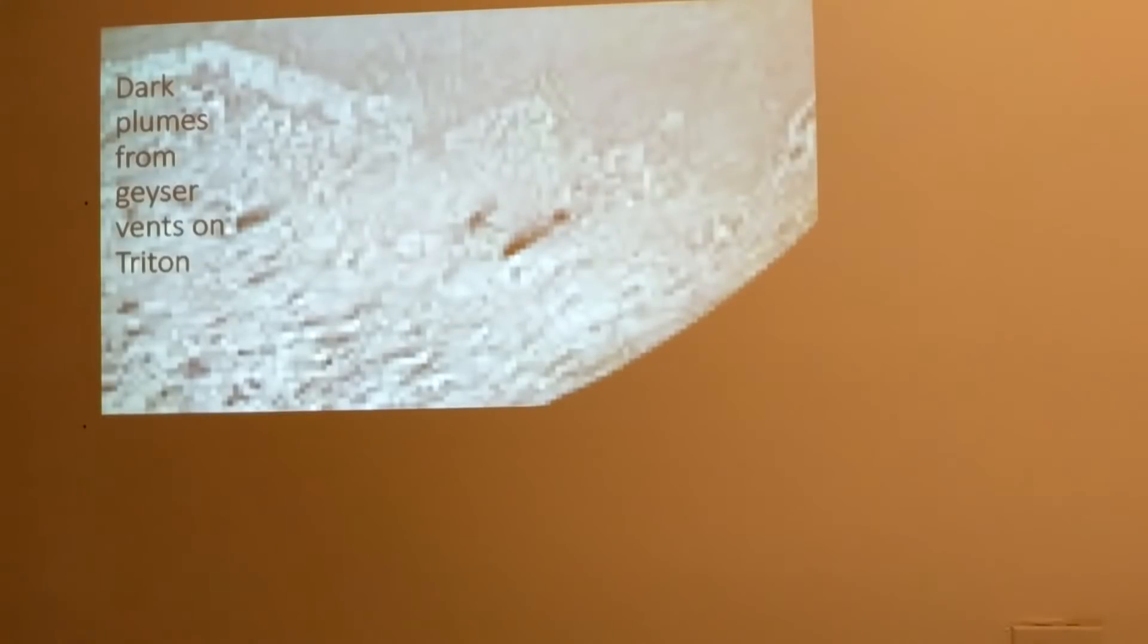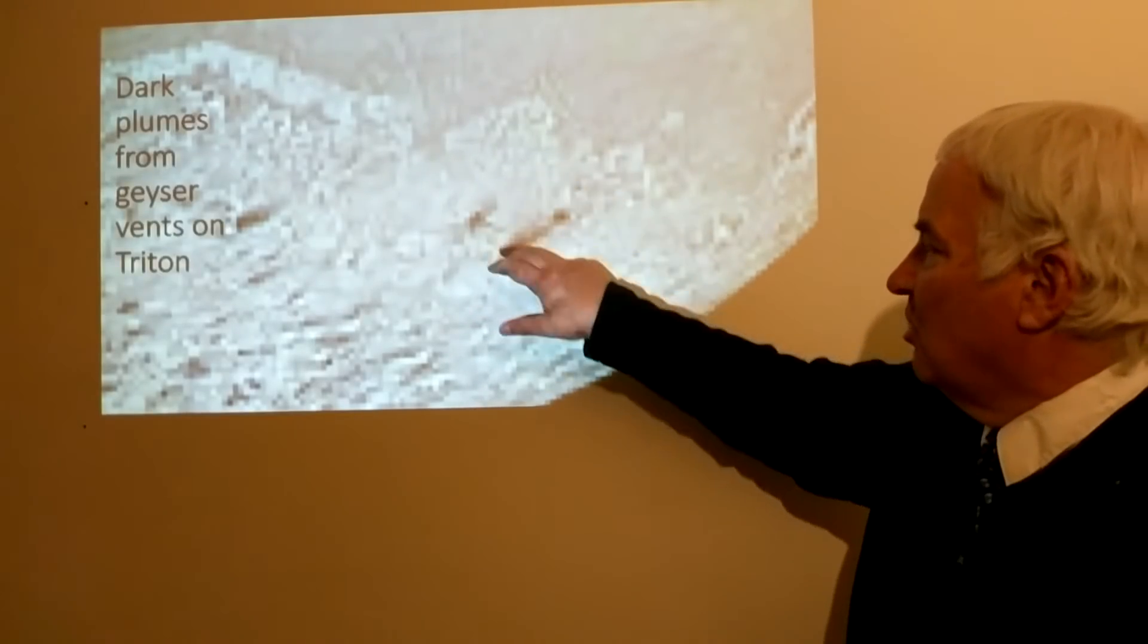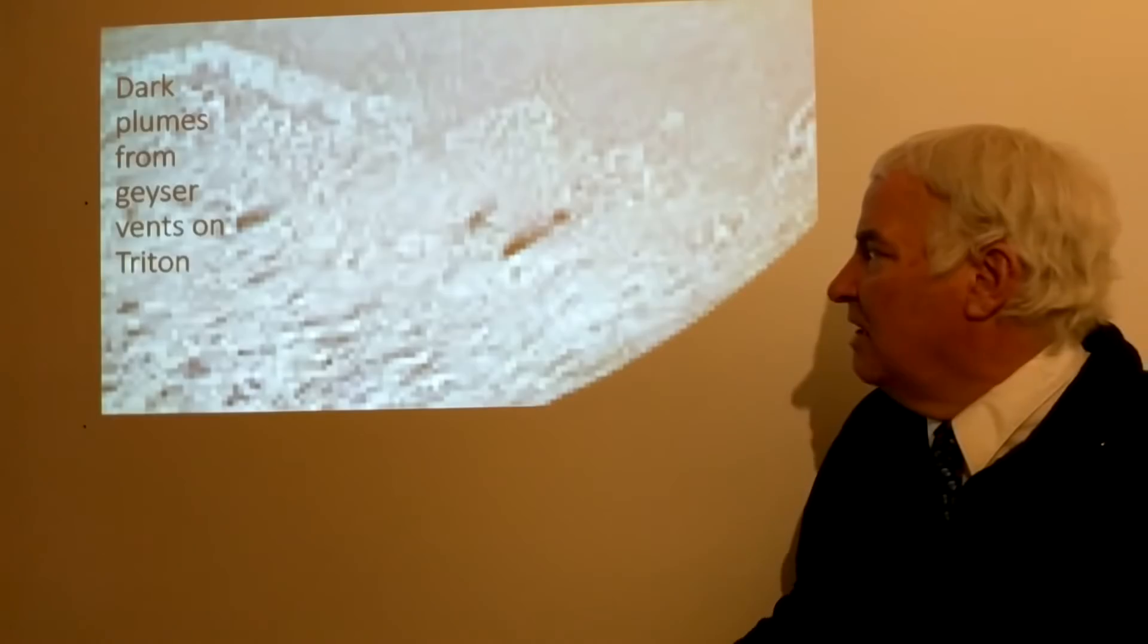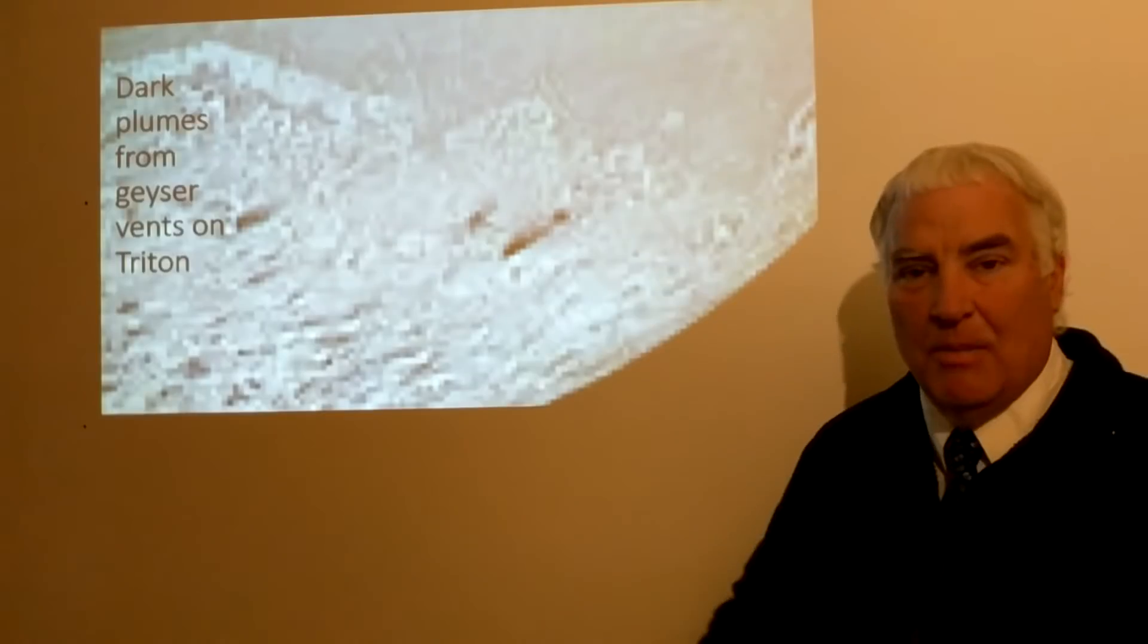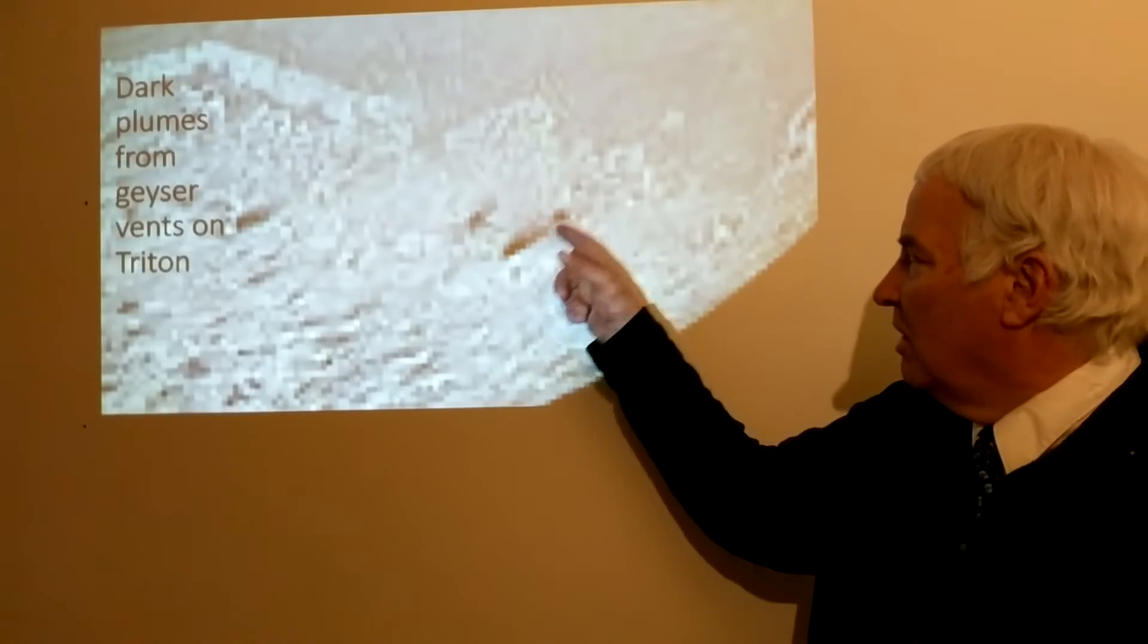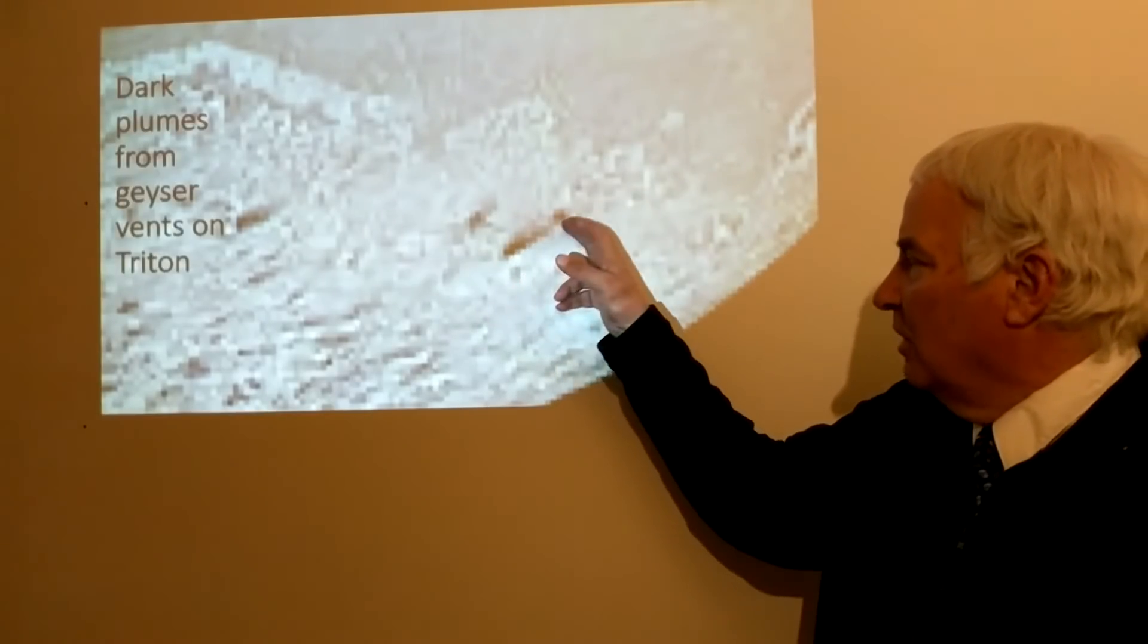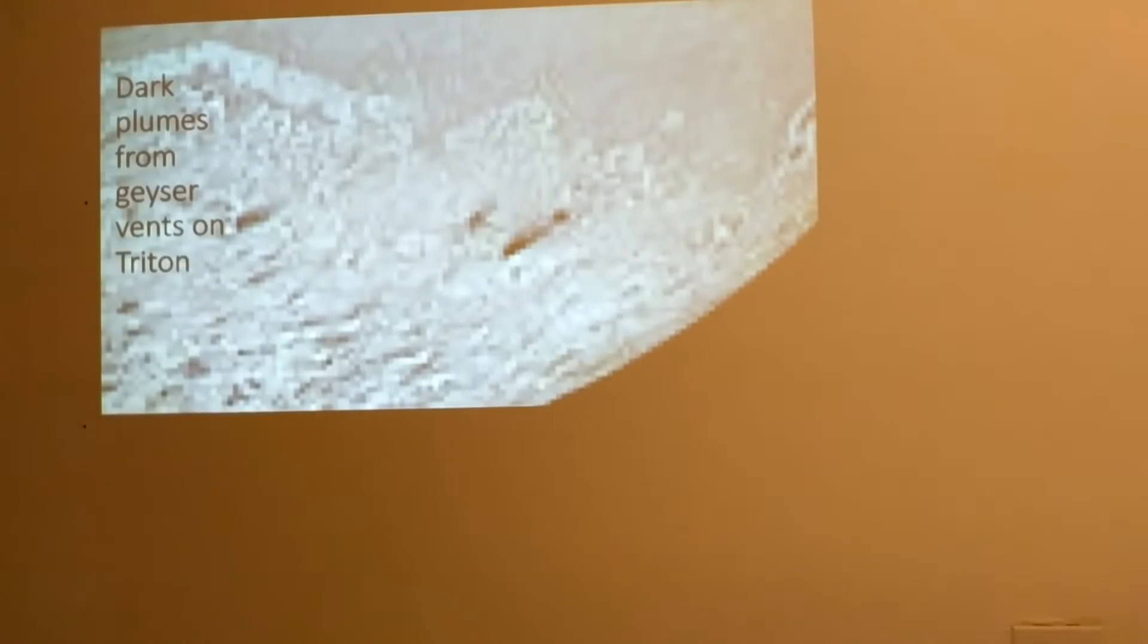One thing that's seen is dark plumes. If we blow that up a little bit, we can see that there are these dark streaks that run across Triton. These are because there are vents, and the dark gases come out of Triton through these geyser-like vents. The dark plumes, sort of like smoke, will pass over and then fall onto the surface and produce these dark patches on the surface.